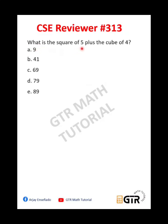What is the square of 5 plus the cube of 4? Okay, so what is the square of 5? So square of 5, that means 5 square, and then plus the cube of 4. So cube of 4, so we have 4 cube.